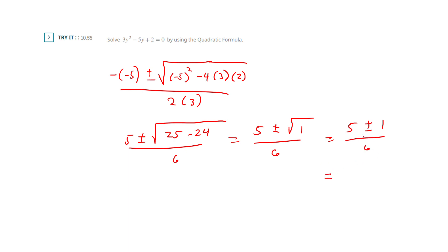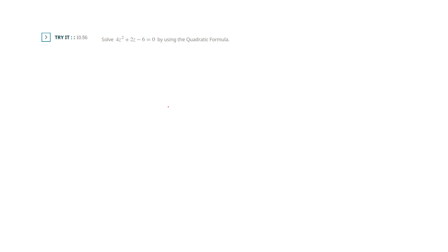Which is 5 plus or minus 1 over 6. And so we can go two ways. Since these are whole numbers, I'd have you finish it. 5 plus 1 divided by 6 is 1. 5 minus 1 divided by 6 is 4 sixths or 2 thirds.